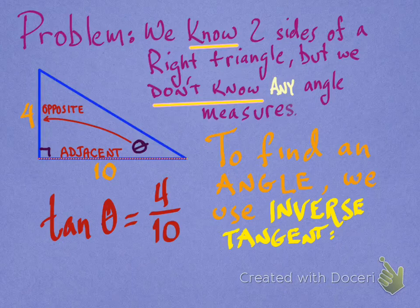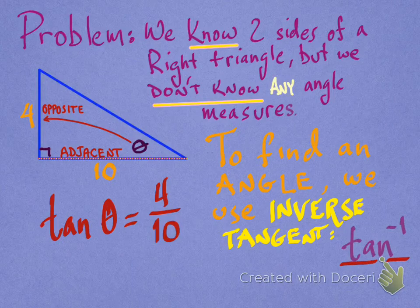Your inverse tangent function is a function on your calculator, just like the tangent function is. In fact, it looks a lot like the tangent. In fact, it's just tan with a little negative 1 sign. So you almost might think it's the tangent.